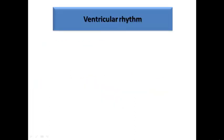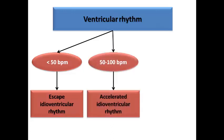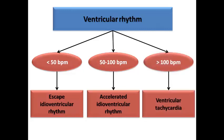Let's remind ourselves of the term ventricular rhythm. Ventricular rhythm originates from a focus inside the ventricle — either by abnormal automaticity, re-entry, or triggered activity. According to the rate we divide it into three types: less than 50 bpm is escape idioventricular rhythm; 50–100 bpm is accelerated idioventricular rhythm; and more than 100 bpm is ventricular tachycardia. The first type is bradyarrhythmia and the last is tachyarrhythmia.